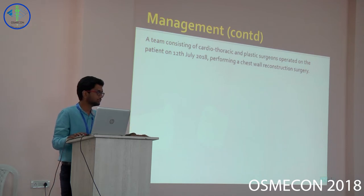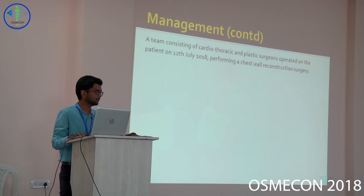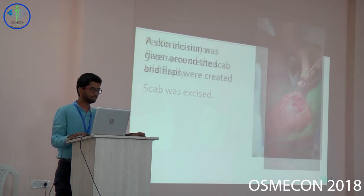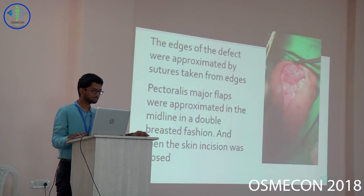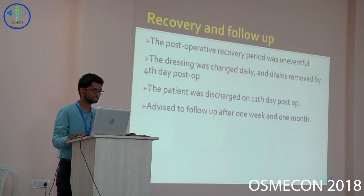The baby was listed for surgery on the 12th of July. The initial plan was to use an acellular matrix to cover the defect if needed, with the alternative being primary closure with sutures. Intraoperatively, the gap was assessed; pectoralis muscle flaps were raised. The gap was excised and pulsatile movement of the sternal edges was observed, so they decided to proceed with primary closure by approximating the edges of the sternum. The pectoralis edges were approximated in the midline in a double-breasted fashion, and the skin incision was then closed.